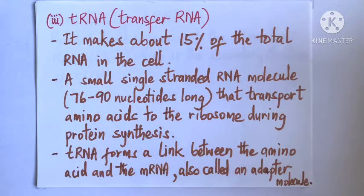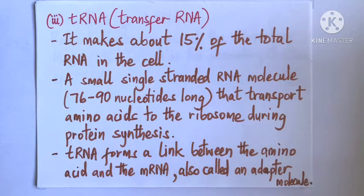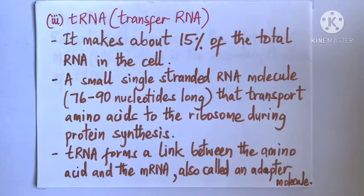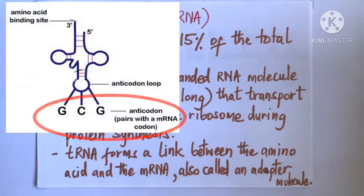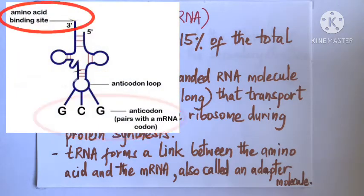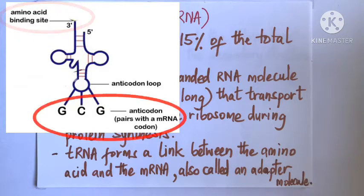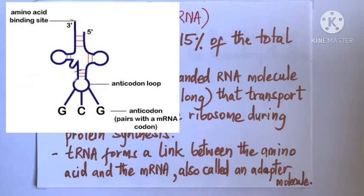The third type of RNA involved in protein synthesis is tRNA, which stands for transfer RNA. It constitutes about 15% of the total RNA and is a short single-stranded RNA molecule made up of only about 76 to 90 nucleotides. tRNA is involved in the transportation of amino acids to the ribosome during protein synthesis. tRNAs have two binding sites: an mRNA binding site and an amino acid binding site, allowing tRNA to function as an adapter molecule linking amino acids to the mRNA.